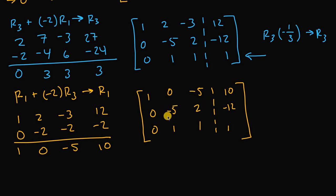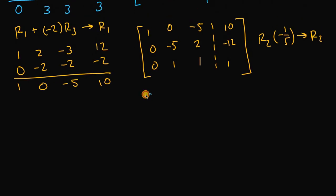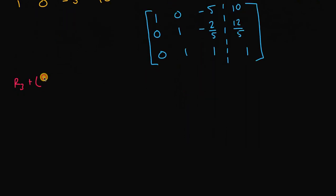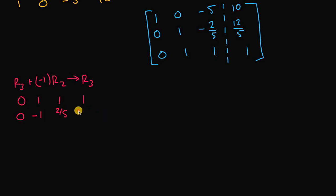The next element I'd work on is this negative 5 — I'll try to get that to a positive 1. I can take this entire row and divide it by negative 5. So I'll take row 2 and multiply it by the non-zero constant negative 1/5, which produces a new row 2. Now I can try to get the element in row 3 column 2 to be 0 by taking row 3 and adding to it negative 1 times row 2. So negative 1 times row 2 gives 0, negative 1, positive 2/5, and negative 12/5.